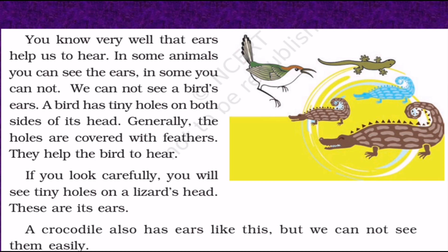If you look carefully you will see tiny holes on the lizard's head — these are its ears. Tiny holes are there on both the left and right sides, even though they are not clearly visible. Like that, a crocodile also has ears, but we cannot see them because they are very tiny — just small holes.